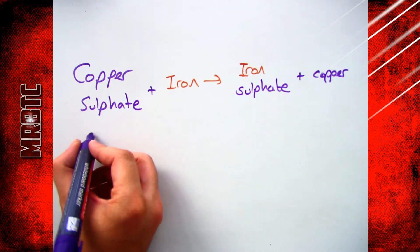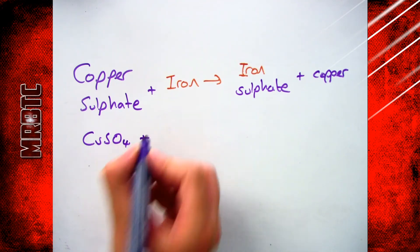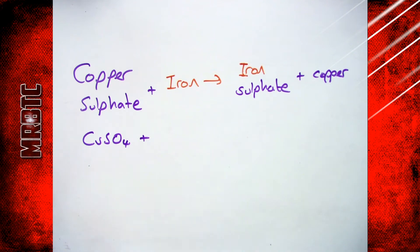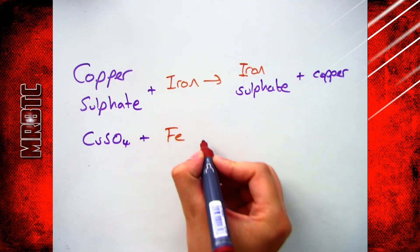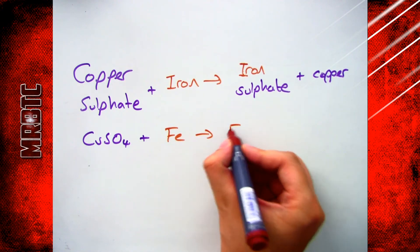When we talk about displacement reactions and oxidation and reduction, we need to be looking at what's happening in terms of electrons, and the best way to do that is to be able to write the ionic equation and from that the half equations.